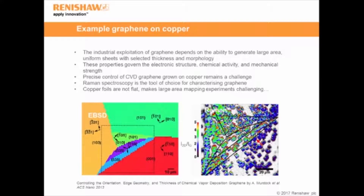However, at the moment it's very difficult to make in large quantities, and for industrial exploitation we need to be able to accurately grow uniform sheets with a selected thickness and morphology, because these properties govern the electronic structure and the chemical activity of the material. The most promising technique at the moment looks to be growth of graphene using chemical deposition on copper, but precise control still remains a challenge.